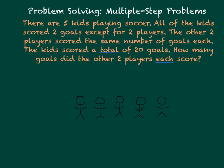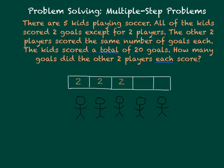There are five kids playing soccer. All of the kids scored two goals except for two players. So how many goals did these three players score? We know that three players times two goals each is six goals.